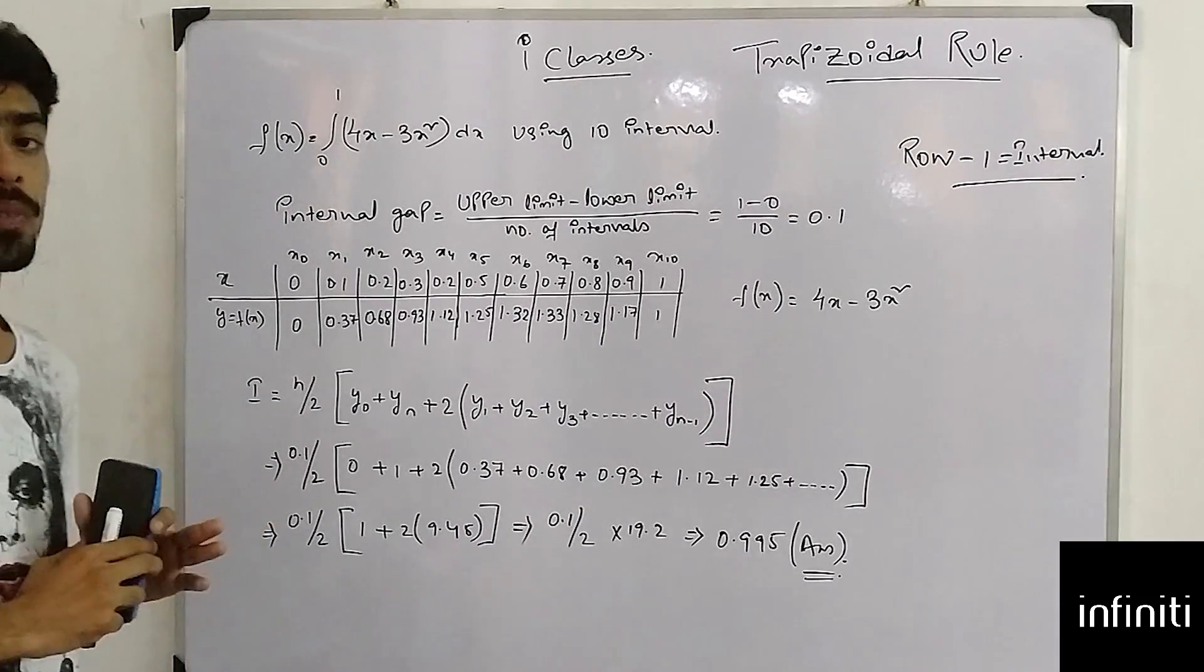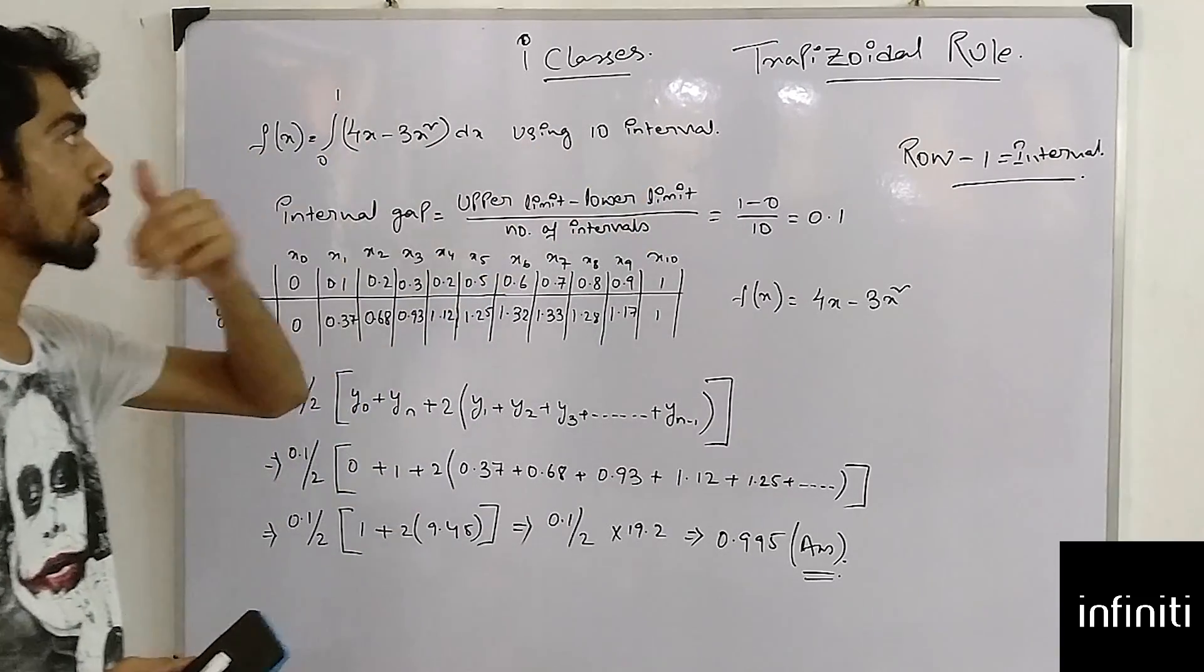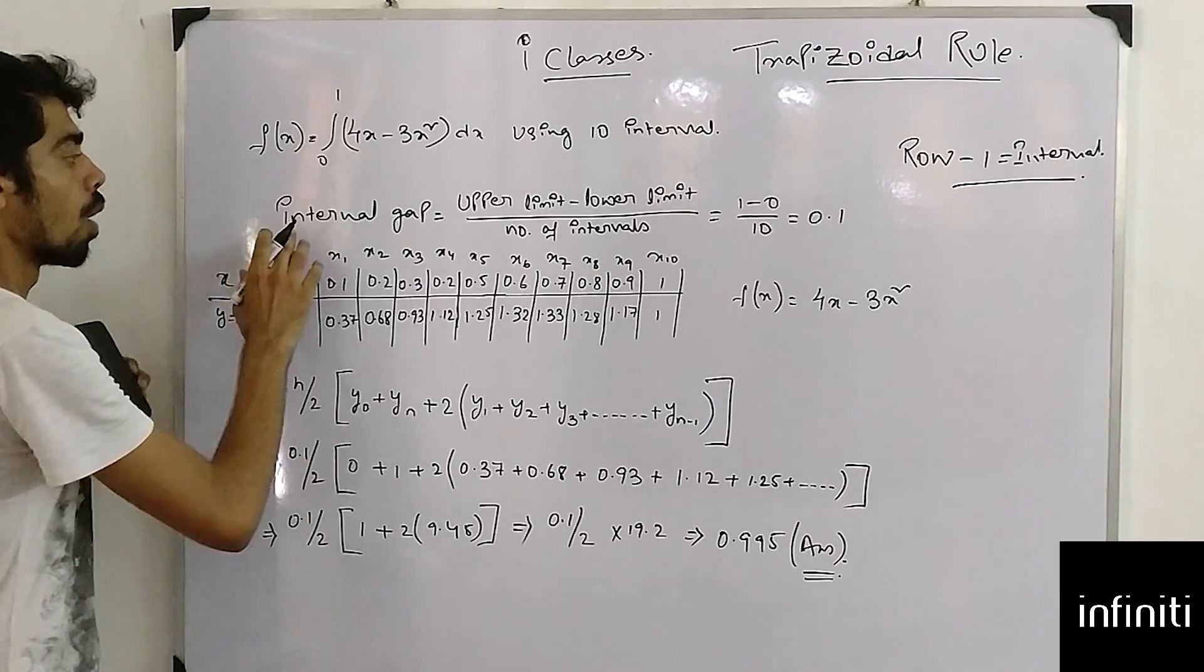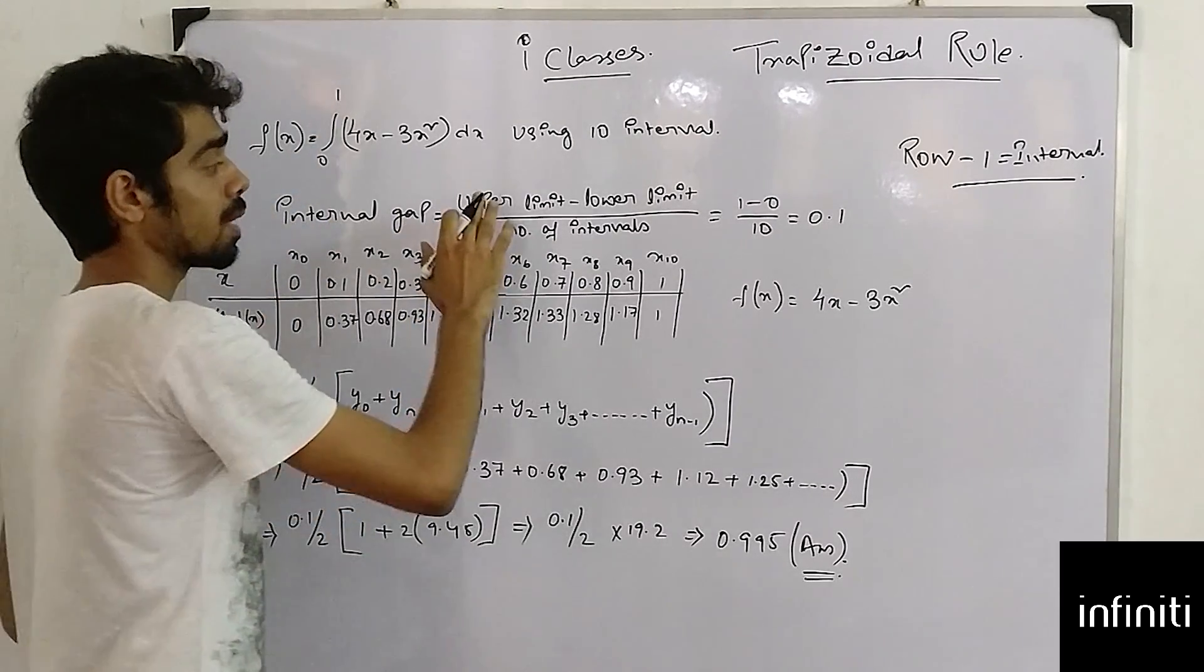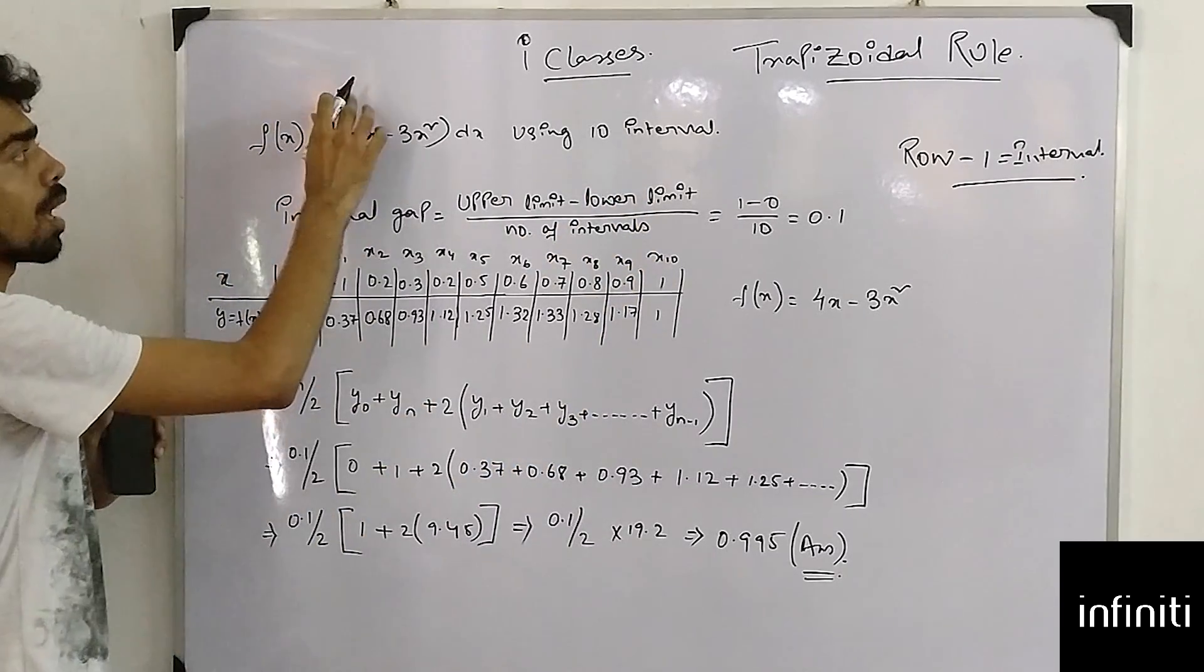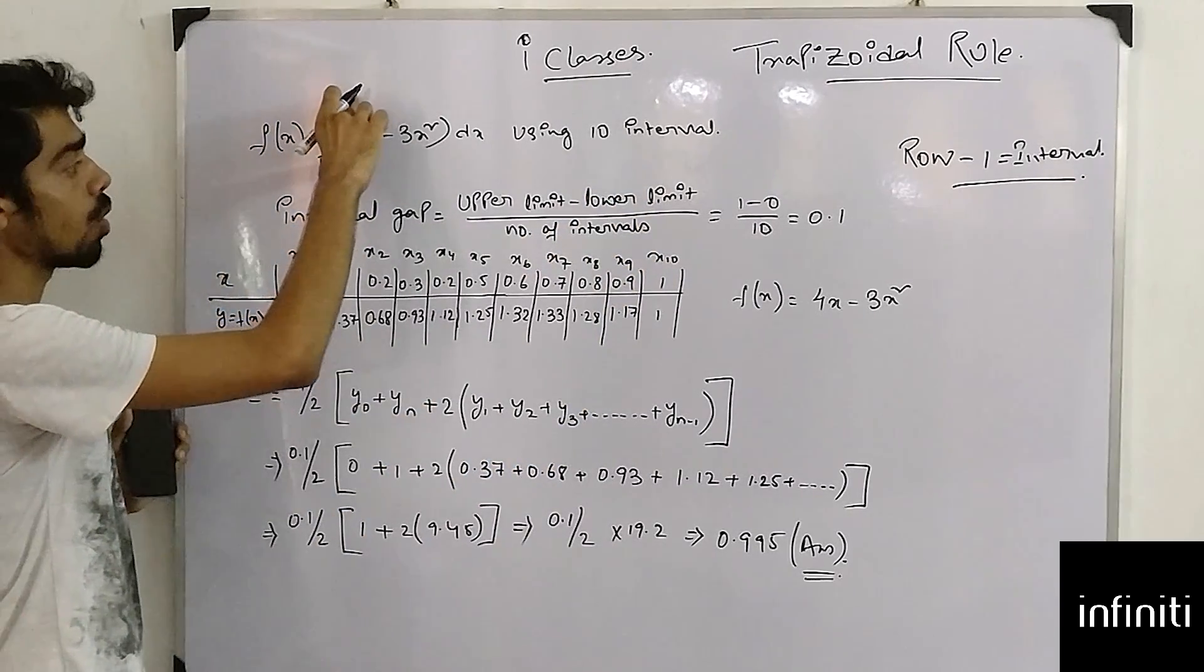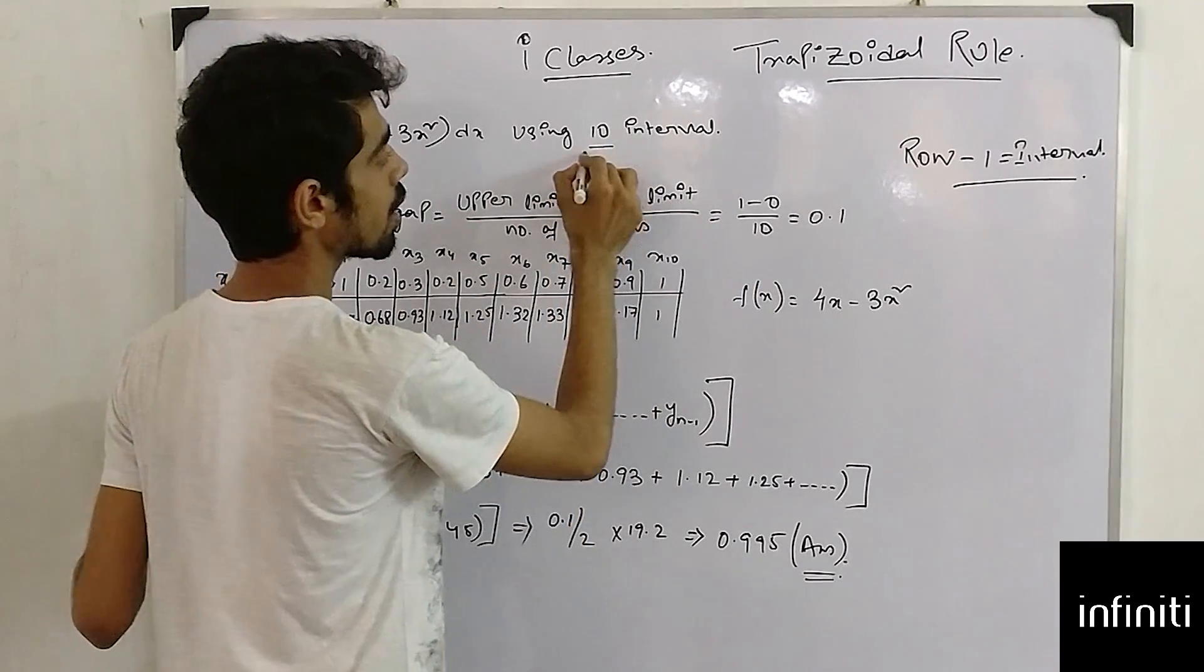Using 10 intervals I have to find out the value of fx. Now what is internal gap? Internal gap is upper limit minus lower limit by number of intervals. What is the upper limit over here? 1. What is the lower limit? 0. 1 minus 0 by how many number of intervals? 10, which is 0.1.